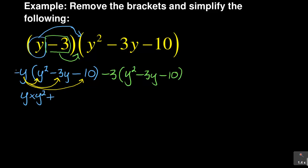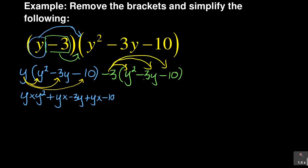So when you do that, you are saying: y times y squared, plus y times negative 3y, plus y times negative 10. The sign I'm using for y is positive, so I get plus y times −3y and plus y times −10. Then we do the same thing with minus 3: minus 3 times y squared, minus 3 times −3y, and minus 3 times −10.